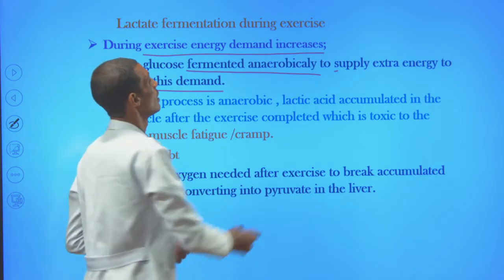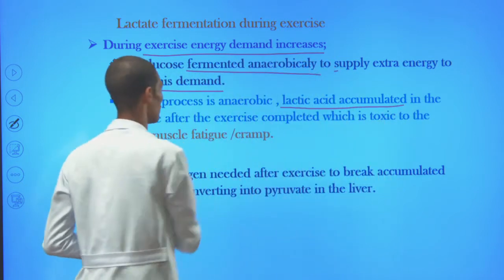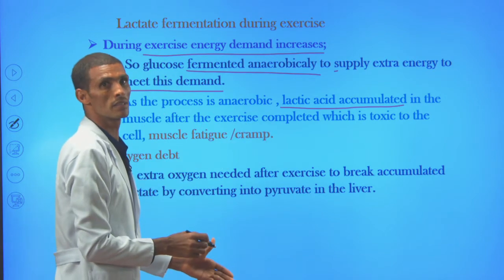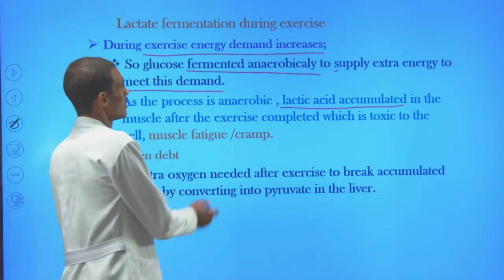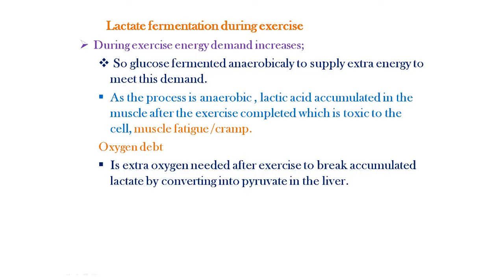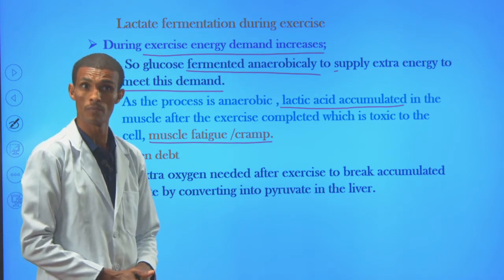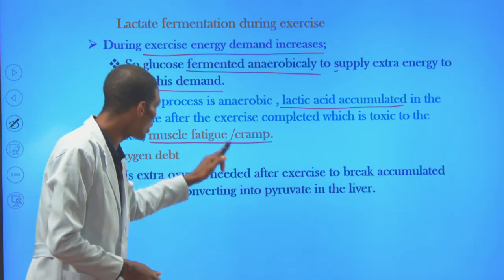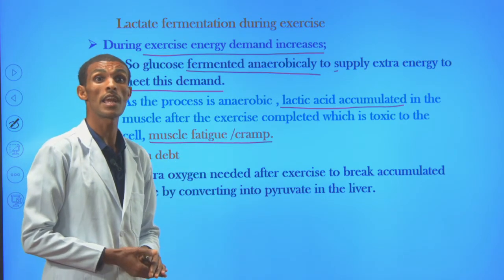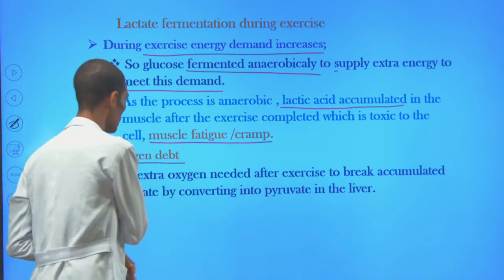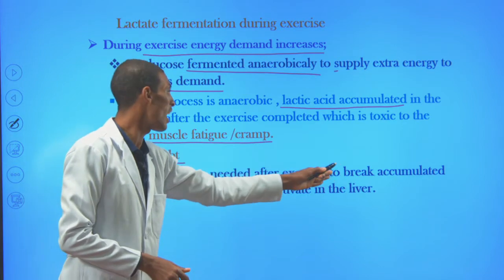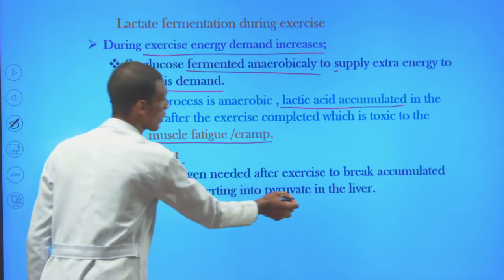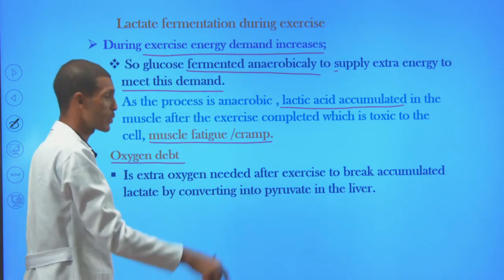As a result of this process, lactic acid may accumulate in the muscle. After exercise is completed — after a short-distance race or another emergency — there may be accumulation of lactic acid in the muscle, which is toxic and brings about muscle cramps. The cell develops another strategy to remove this accumulated toxin: it needs extra oxygen, called oxygen debt. This is an extra oxygen needed after exercise to break down accumulated lactate by converting it to pyruvate, which can continue the glycolysis pathway in the liver.